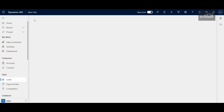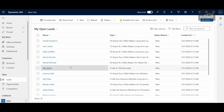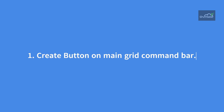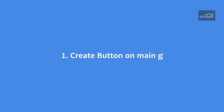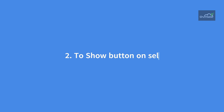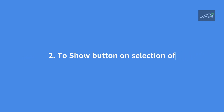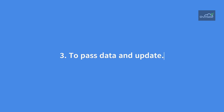For this particular requirement we have three main sub-requirements: first, to create a button on the main grid command bar of the Lead entity; second, to show this button only if more than one record is selected at a time; and third, to pass the selected records' data to the custom page and update the information.